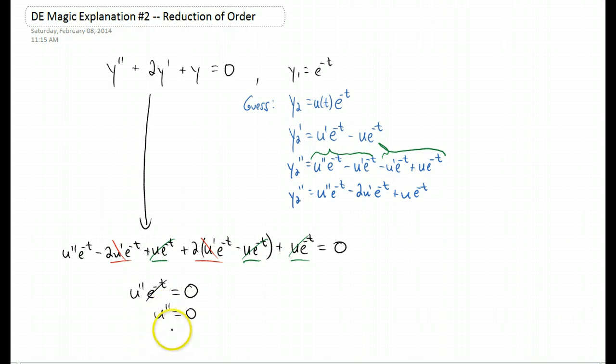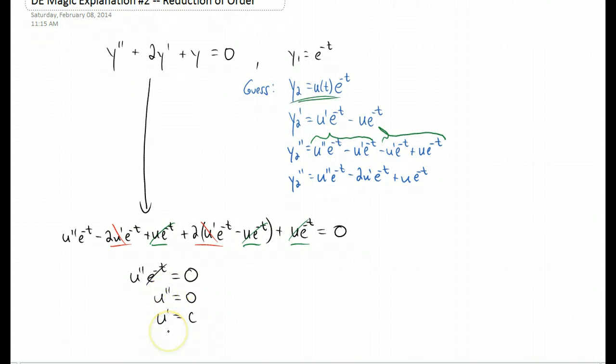So you can actually integrate. If you integrate once, you're going to get u prime is a constant. If we integrate one more time, again with respect to t, you get u equals c times t plus some other constant. I'll just call it d.